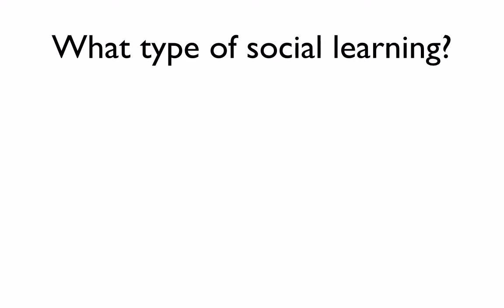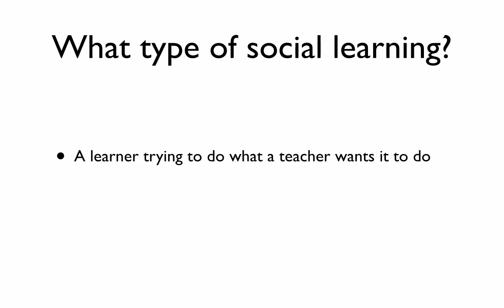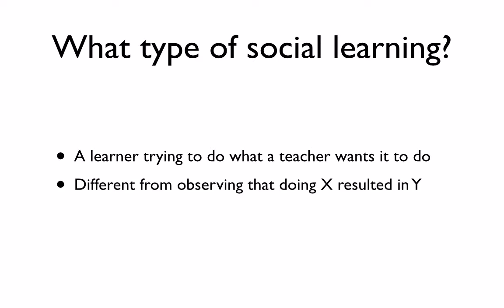What type of social learning? There are many different types of social learning and I will be focusing on a specific subset — a learner trying to do what a teacher wants it to do. This is different from observing that doing X resulted in Y. For example, a chimpanzee puts a stick down an anthill, pulls it up and eats the ants. Another chimpanzee observes and infers: if I put a stick in an anthill, I can eat ants. This is social learning, but it's different from trying to do what a teacher wants you to do.